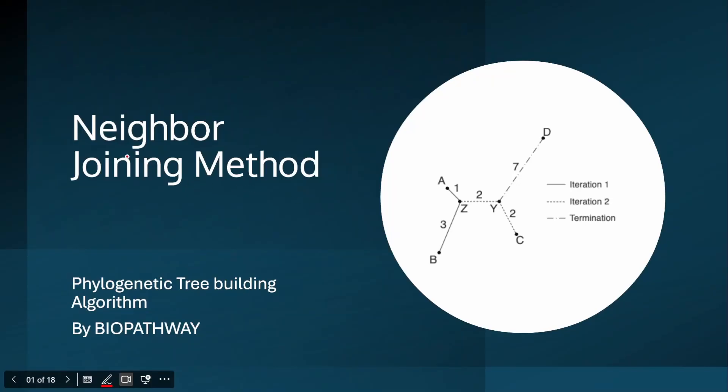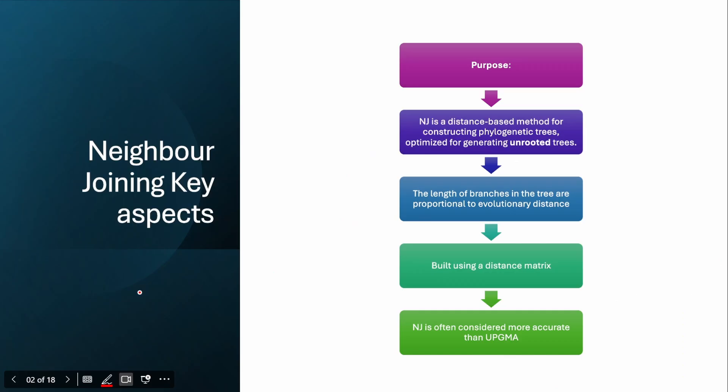This video is about the neighbor joining method and how we can solve a phylogenetic tree using this method. The neighbor joining method creates unrooted trees and the length of the branches are proportional to the evolutionary distance between the different taxons. It is built using a distance matrix and is often considered more accurate than the UPGMA method.